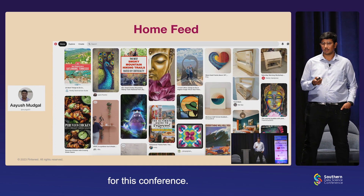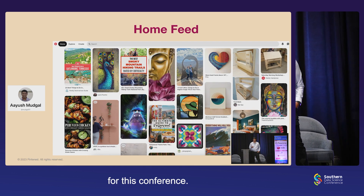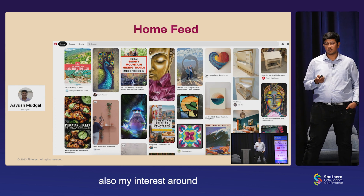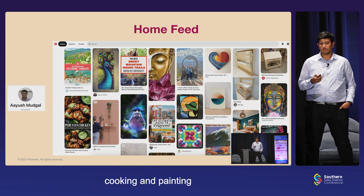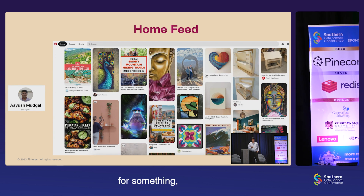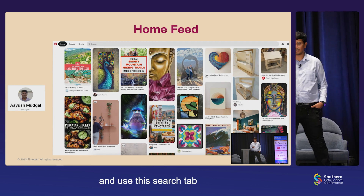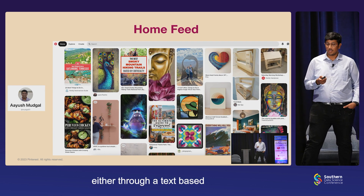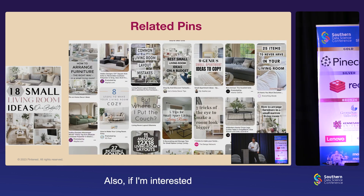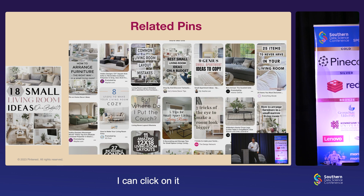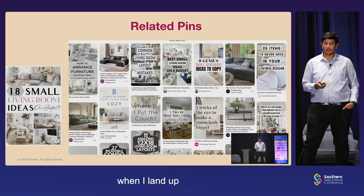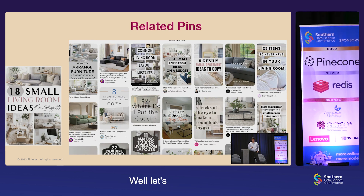Since I've been wanting to travel to Atlanta for this conference, I've been searching for travel ideas, which you can see. My interest around cooking and painting are some of those things that I see on my feed. If I want to search for something, I can go about and use the search tab, either through a text or an image-based solution. Also, if I'm interested in a particular pin, I can click on it to get more information, and that's when I land on the related pin surface.